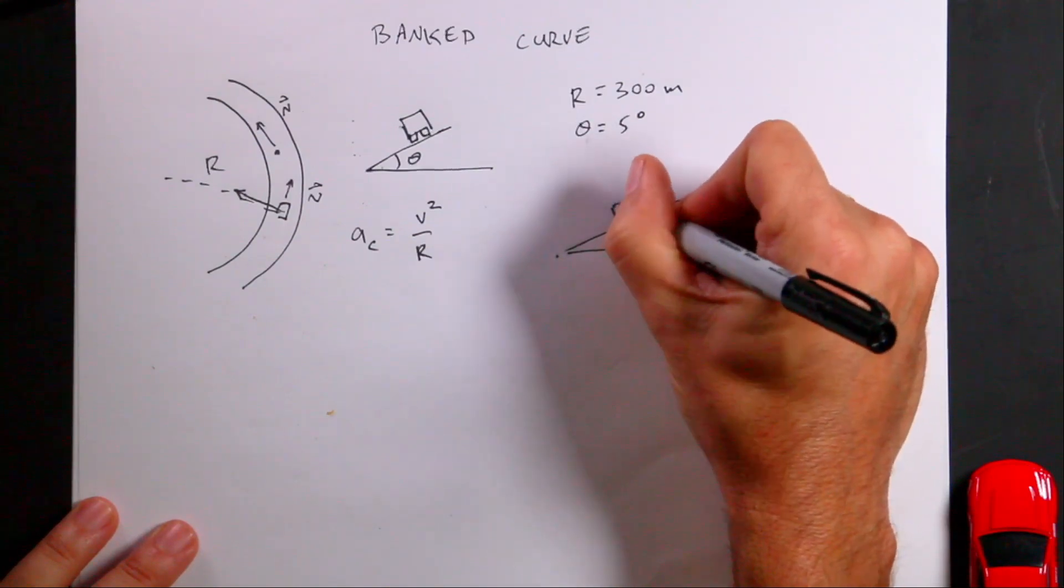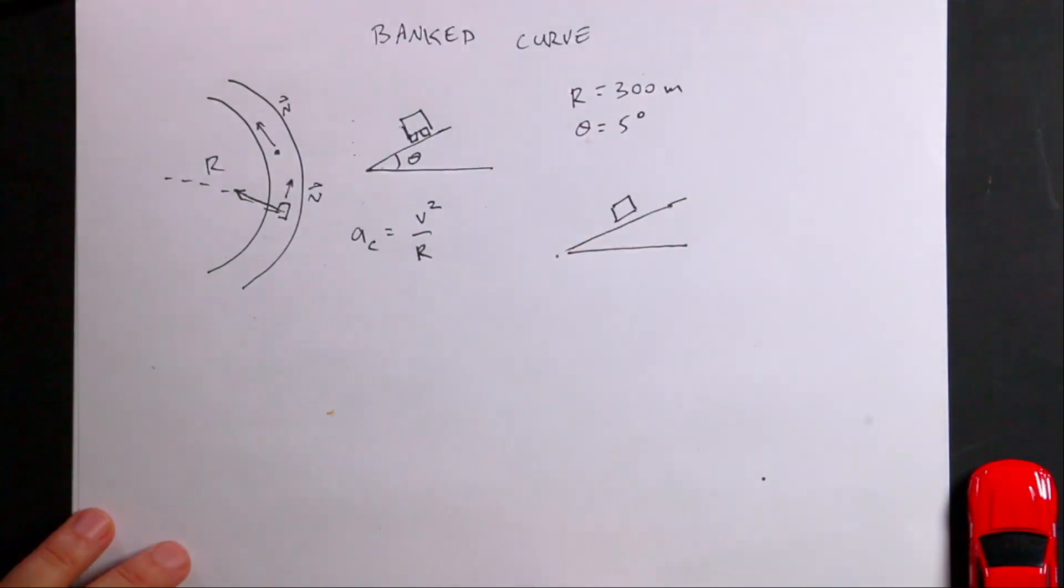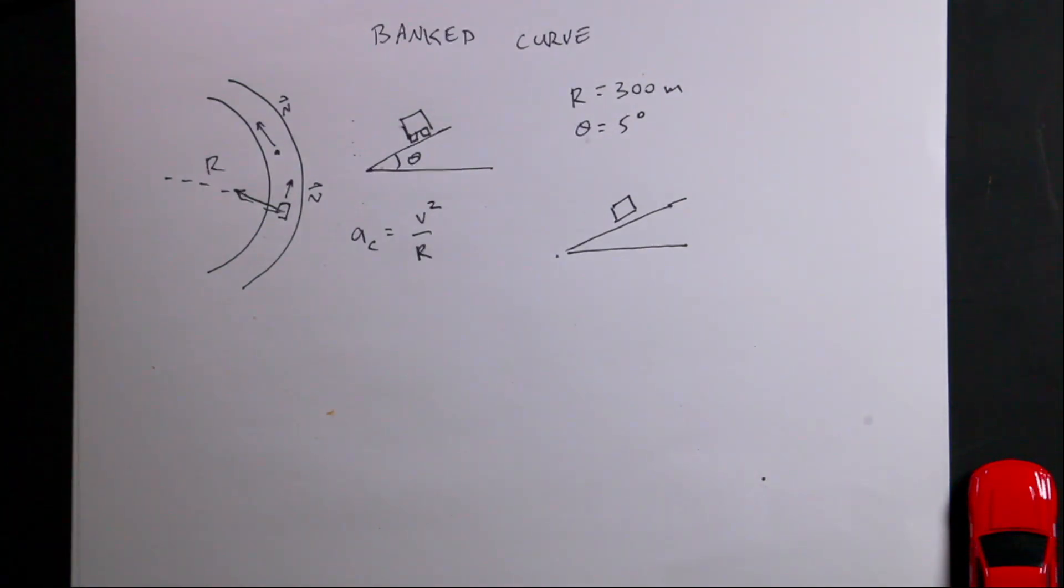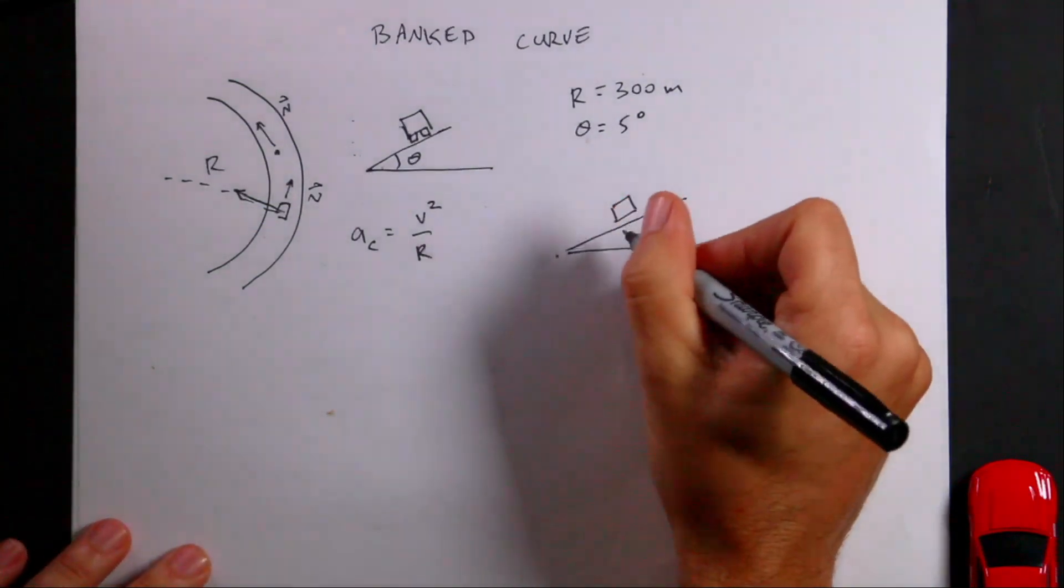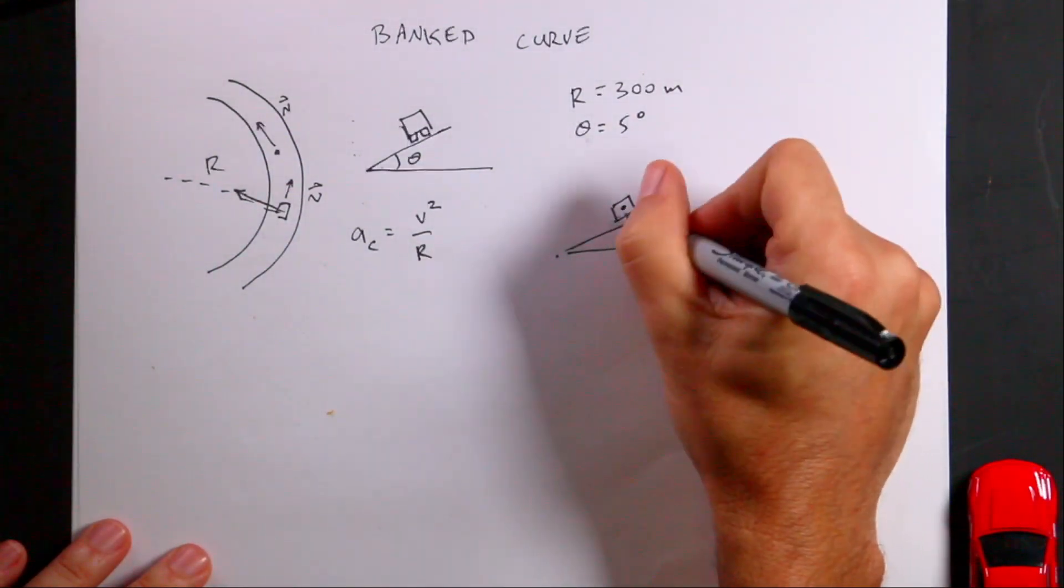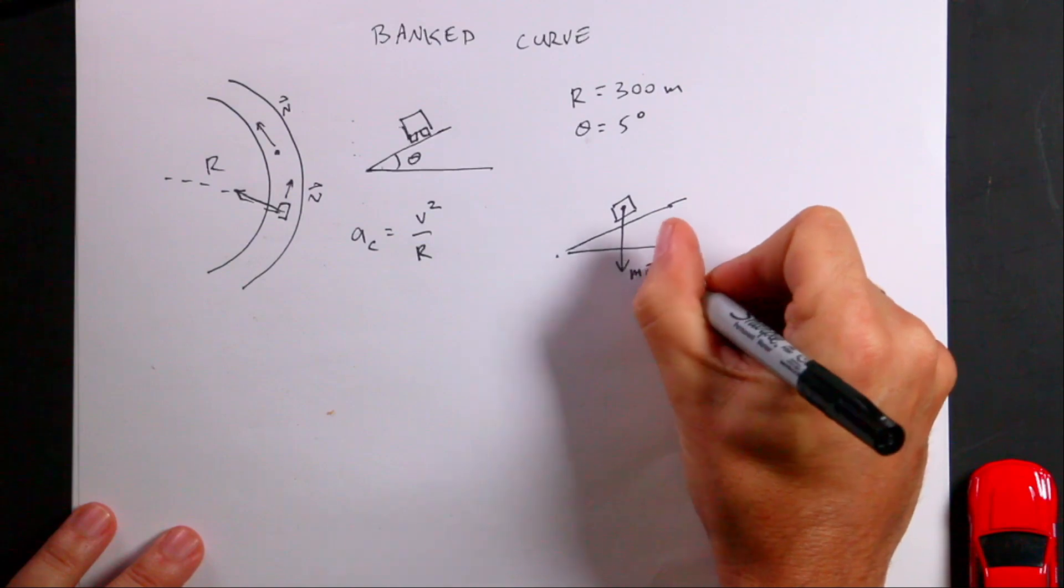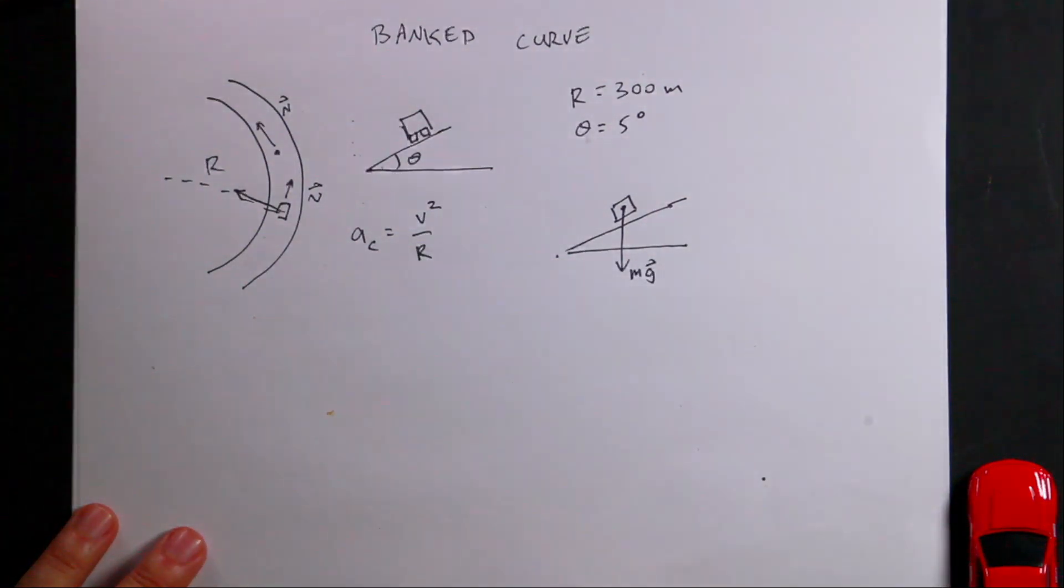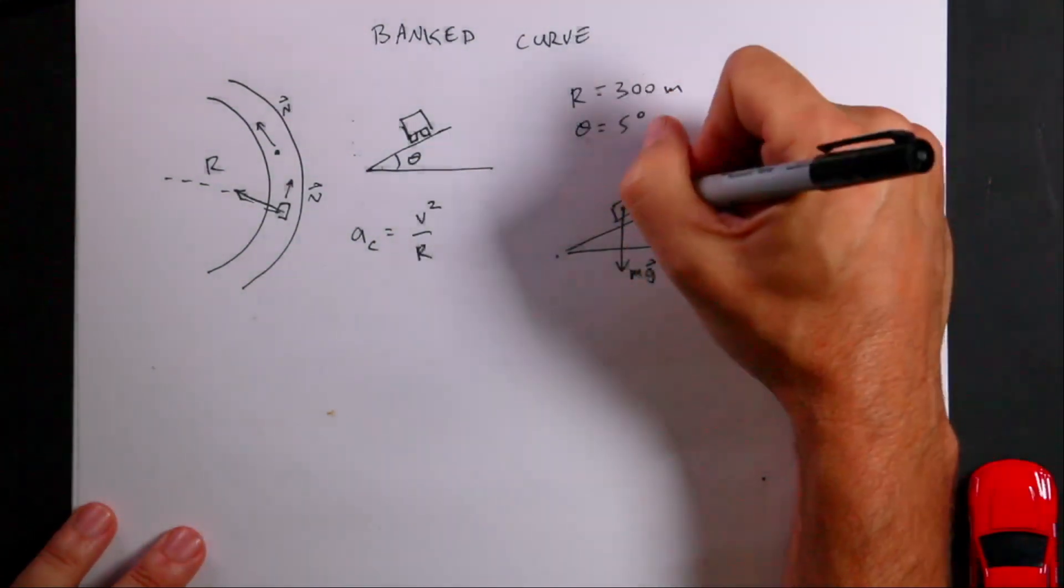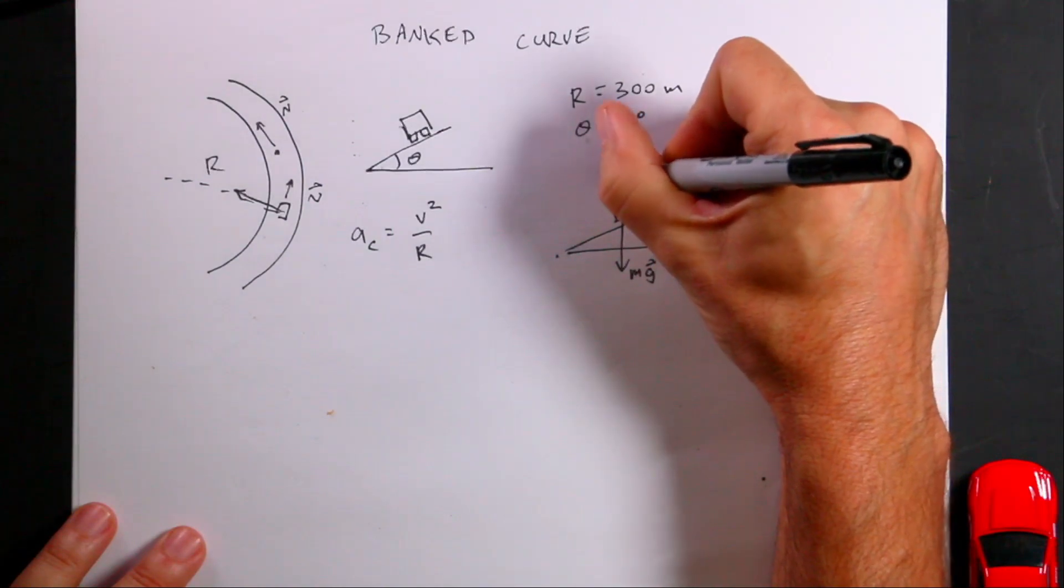I was just getting more space. There's my car right there. Now we have to think about long range forces and contact forces. What long range forces are acting on this? Well, the only one is the gravitational force pulling straight down, mg. What contact forces are there? The road's touching it, so that would exert a normal force which means perpendicular. There is a normal force that's perpendicular to the road this way.